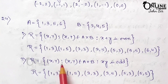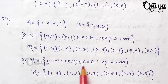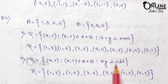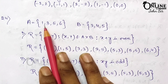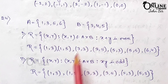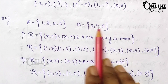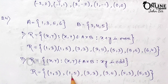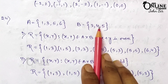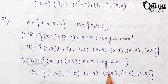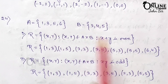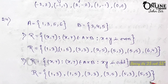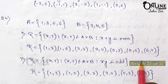For the second part of sum 24, find ordered pairs where x·y is odd. Checking: (1,3)=3 odd ✓, (1,5)=5 odd ✓, (3,3)=9 odd ✓, (3,4)=12 even ✗, (3,5)=15 odd ✓, (5,3)=15 odd ✓, (5,5)=25 odd ✓. So R = {(1,3),(1,5),(3,3),(3,5),(5,3),(5,5)}.